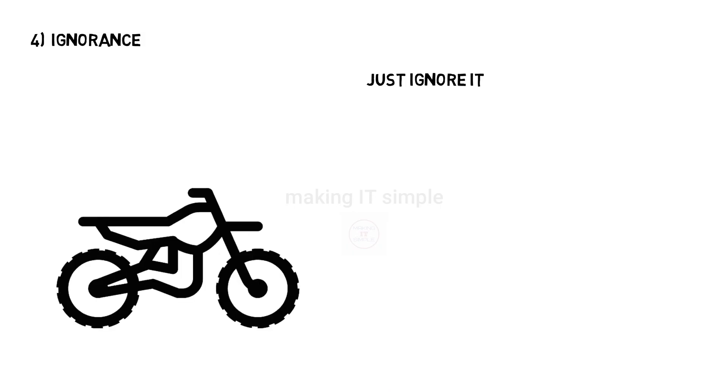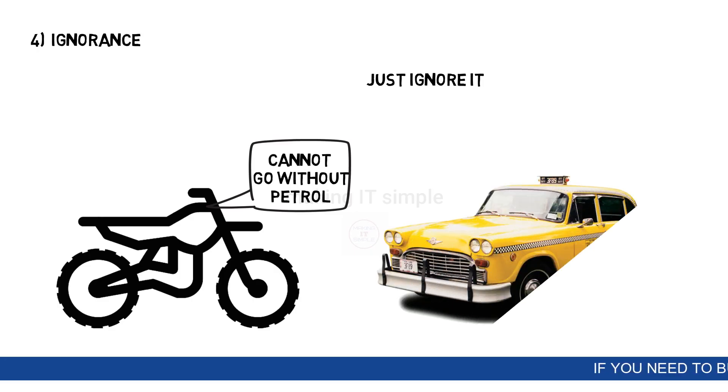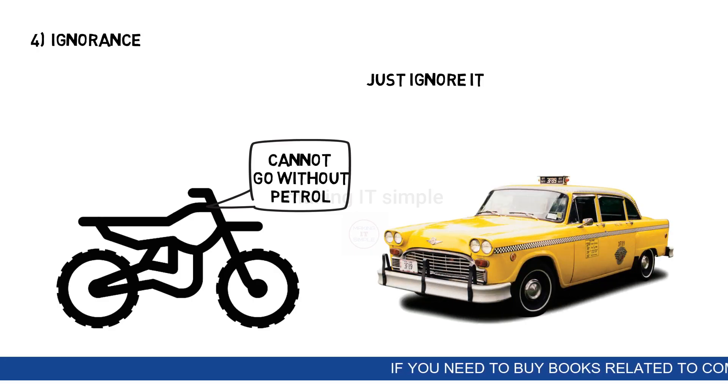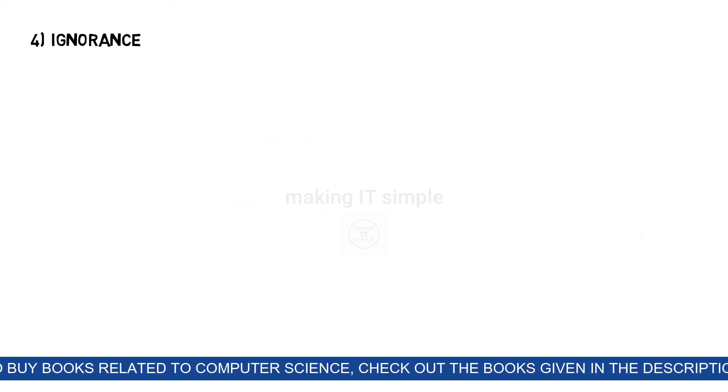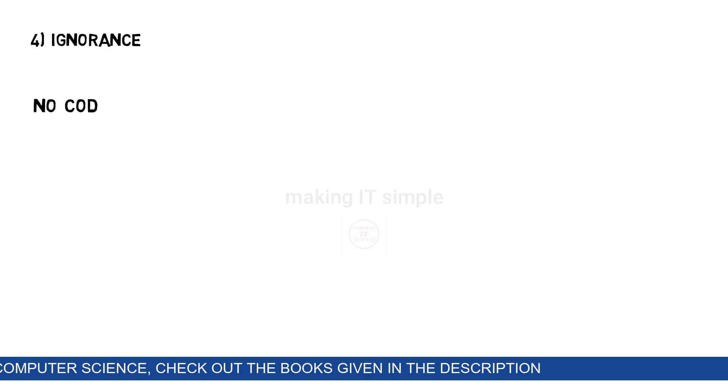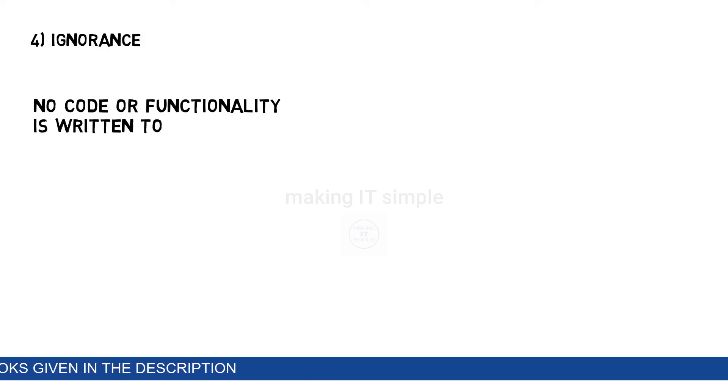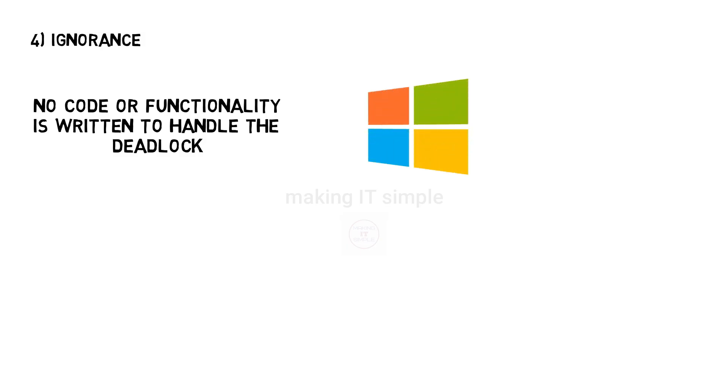Fourth and last is ignorance. It basically means completely ignore the problem. Again we will take the bike example. Let's say while riding, the fuel gets over and the bike stops. Ignorance approach here means you just leave the bike there and take a cab or taxi or any other transportation to reach your destination. Ignoring the problem is the idea behind this approach. In this approach the deadlock is ignored, like it is not considered as a problem. You may think that this is a bad approach, but Windows and Unix systems use this approach.